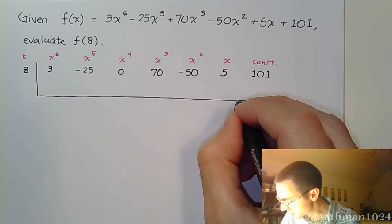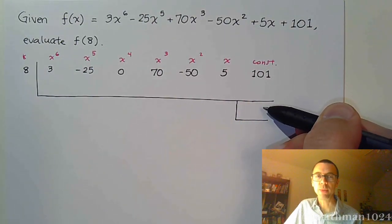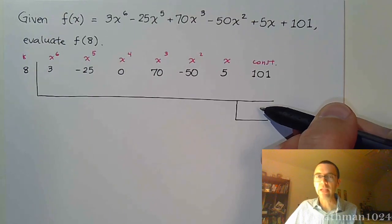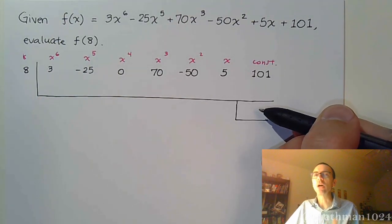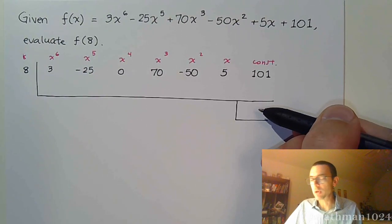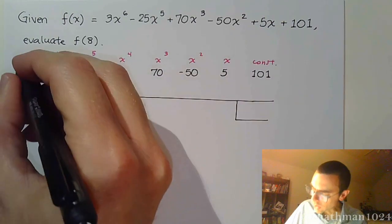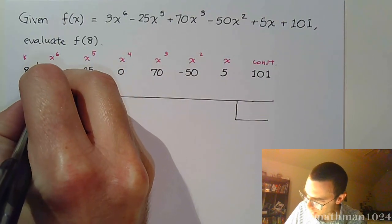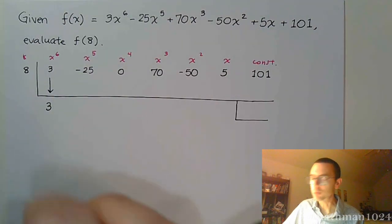So, with this synthetic division, what I get right here for my remainder is what f(8) equals. So, all the numbers I get here in the middle, I don't really care about. That's just part of doing synthetic division. That's part of the process. I care about the number that's here at the end. So, as with all synthetic division problems, we're going to bring down this lead coefficient 3, and it's all going to be about multiply and add.